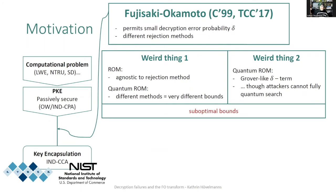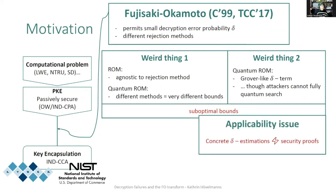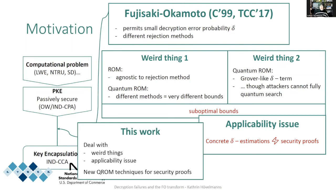So all in all we were wondering whether the bounds we've seen so far might be suboptimal. A more interesting part of our observations is that we encountered an applicability issue: the definition of the error probability delta required for our security proofs does not match the estimations of delta that were given for concrete schemes like Kyber.